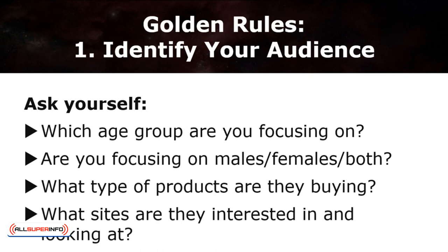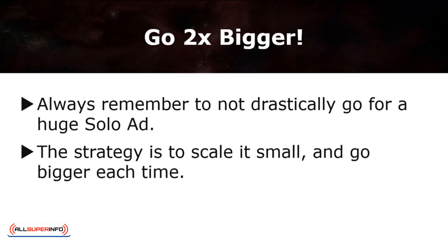The first golden rule: identify your target audience and be familiar with their demographics. For instance, if you're selling supplements for weight loss, ask yourself: which age group are you focusing on? Are you focusing on males, females, or both? What type of products are they purchasing? What sites are they interested in? It's important to identify these factors as it will aid you in being more specific towards your advertisement goals. After you've identified your target audience and found a mailing list that works for you, keep going two times bigger than your previous round. For instance, if you purchase 50 subscribers and it works, continue with 100 the next round, and continue until you've accumulated your ideal list. Always remember not to drastically go for a huge solo ad — minimize risk and maximize your return.